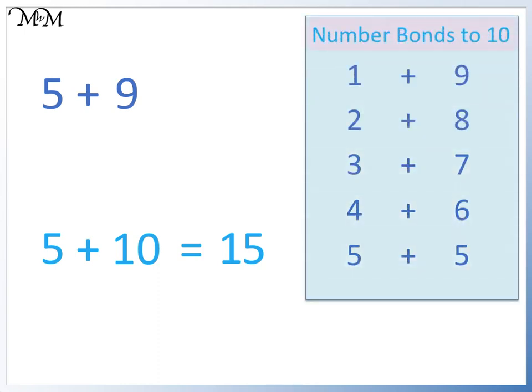We can then use our number bonds to 10 to help us. 10 is 1 larger than 9, so we can subtract 1 to get our answer. If 5 plus 10 equals 15, then 5 plus 9 equals 14.